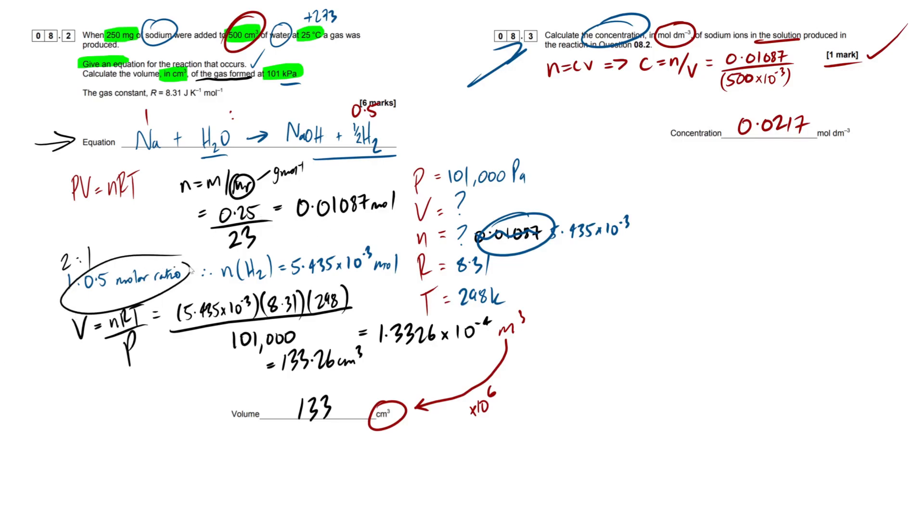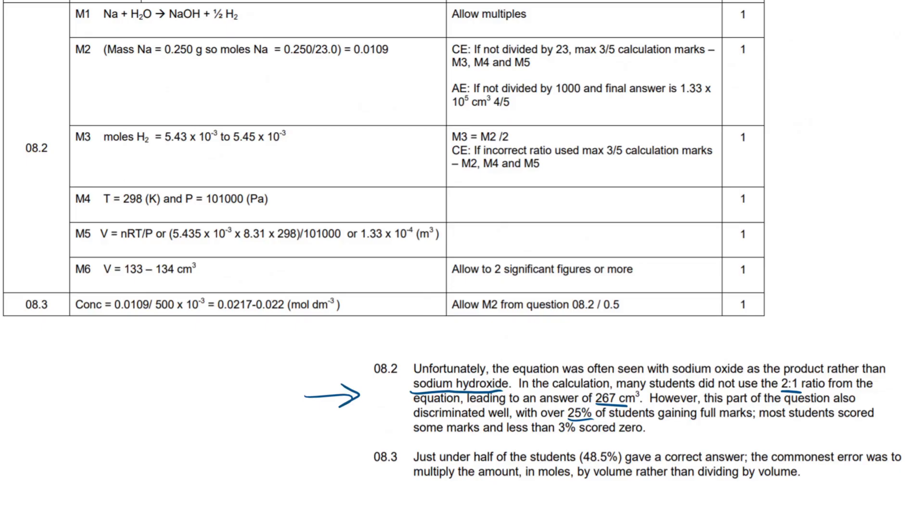So I put a 1 to 0.5, exactly the same thing as a 2 to 1. Don't let that confuse you. Normally, they just like to see integers, but it's both correct. They won't give you a mark for this. They'll give you a mark for this. Or ultimately, they'll give you marks for this. So what have we got here? So less than 3% scored 0, so that's good. Only 3% of people out there scored 0.